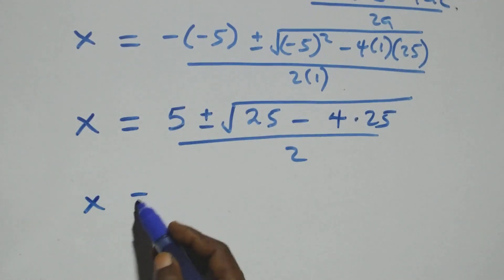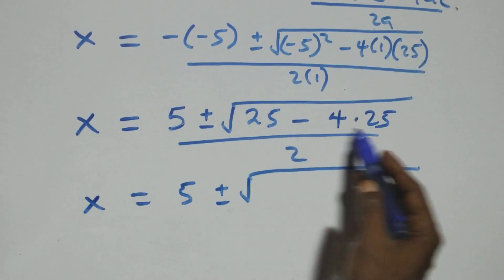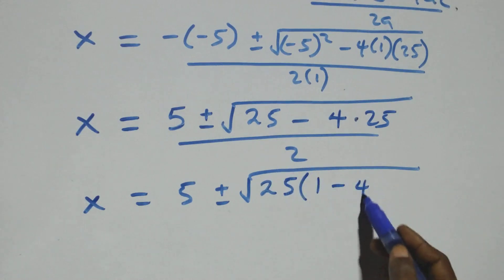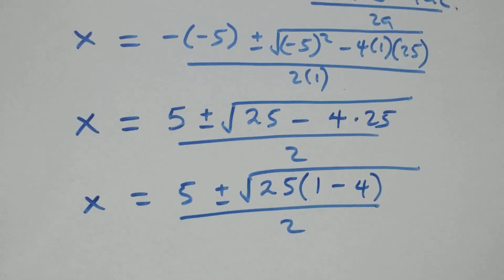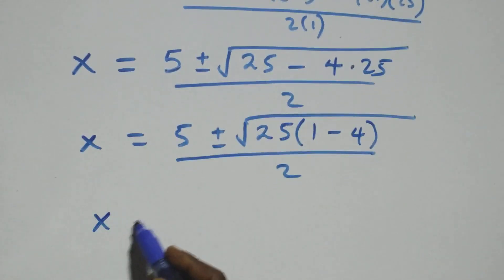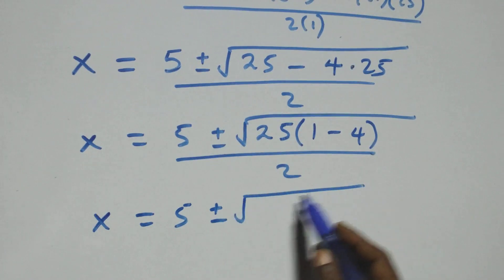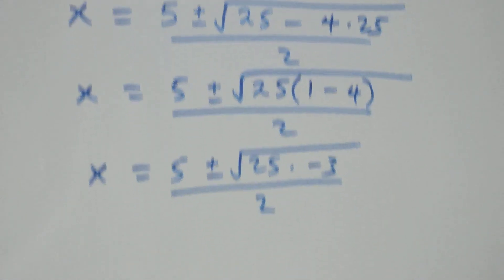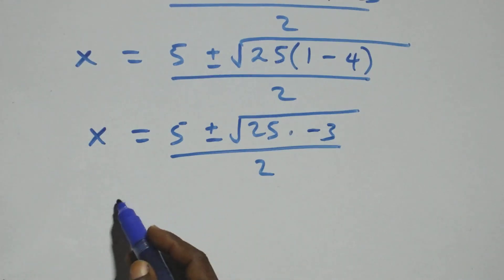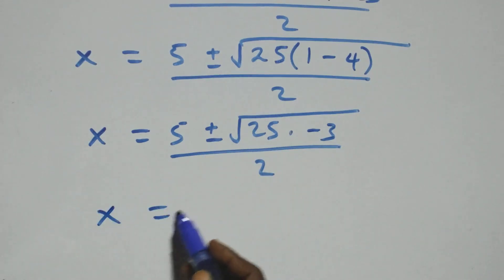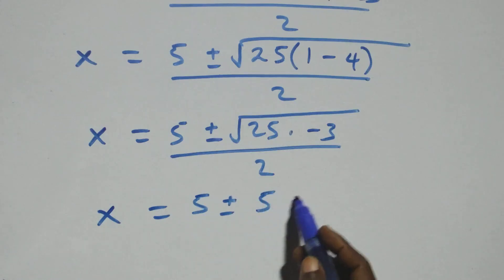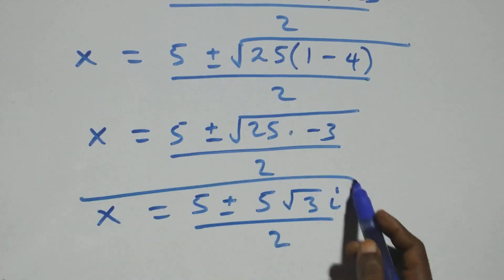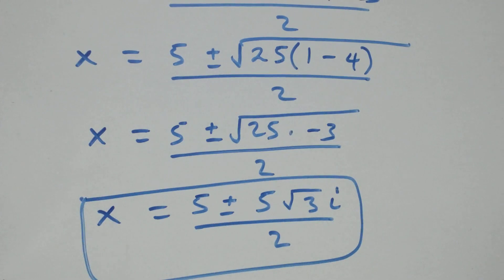We factor out 25 as common: x equals 5 plus or minus square root of 25 times (1 minus 4), which gives 25 times (minus 3), all over 2. Separating root 25 as 5, we get x equals 5 plus or minus 5i root 3, all over 2. These are two complex solutions.